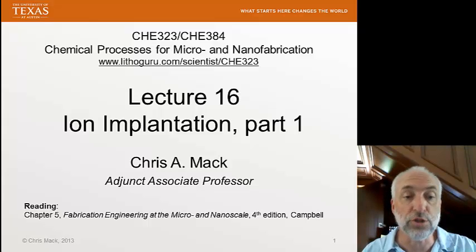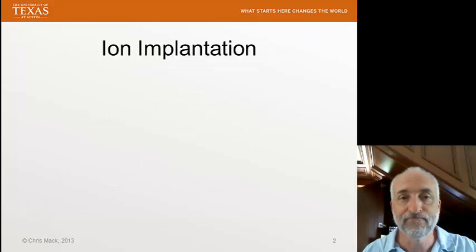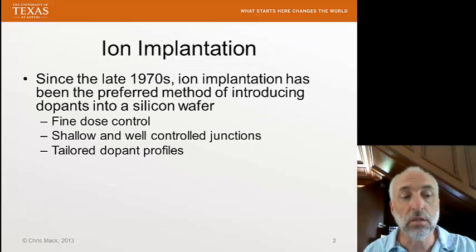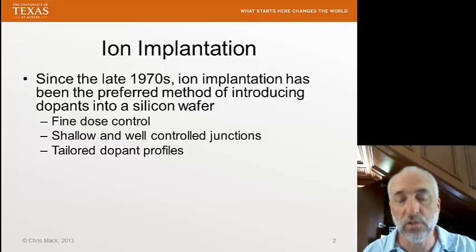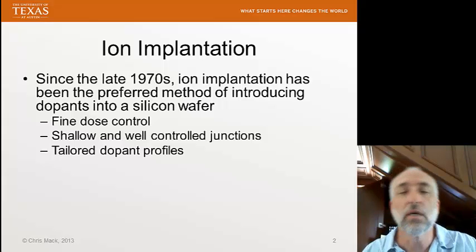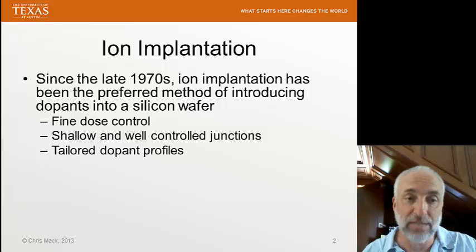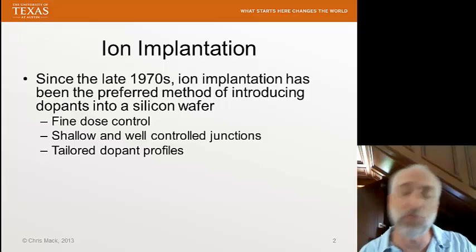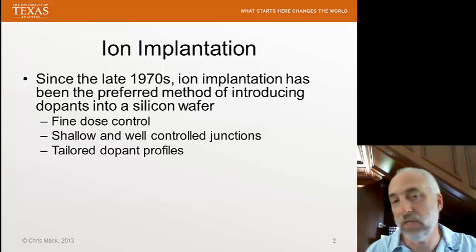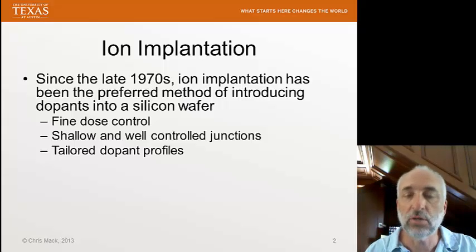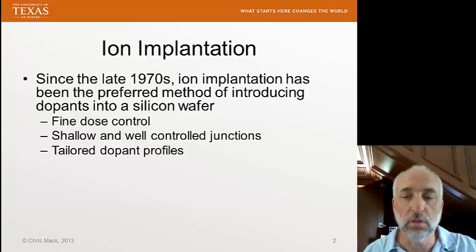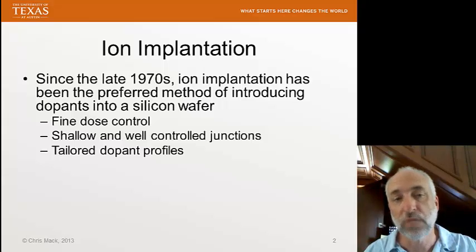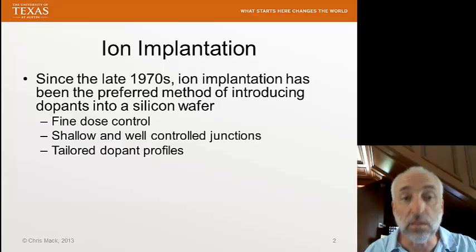The reading for these lectures is Chapter 5 of our textbook by Campbell. Ion implantation took over from diffusion as a method of introducing dopants onto the silicon wafer. We talked about putting wafers in a diffusion furnace, introducing a gas at very high temperature, allowing that gas to accumulate on the surface and diffuse into the wafer. By the late 70s, by 1980, ion implantation replaced diffusion as the method of introducing dopants into the wafer for the vast majority of state-of-the-art processes, and it's been that way ever since.